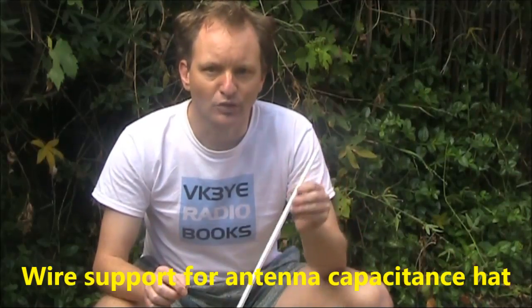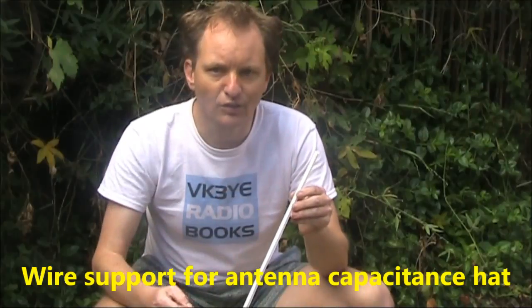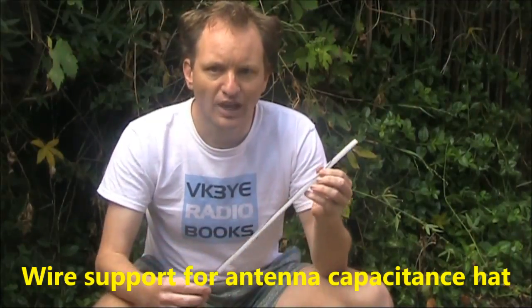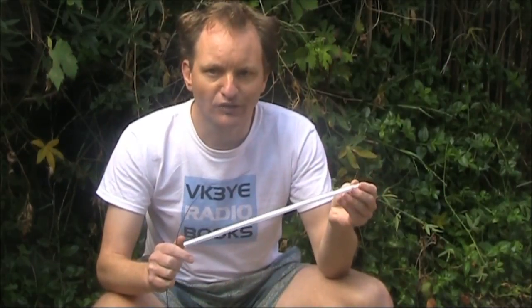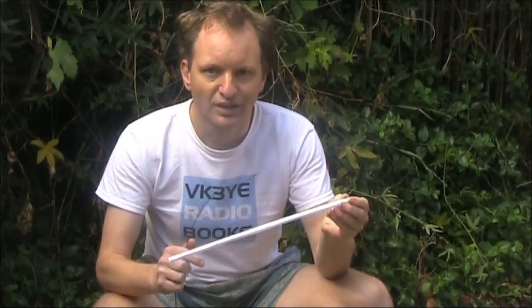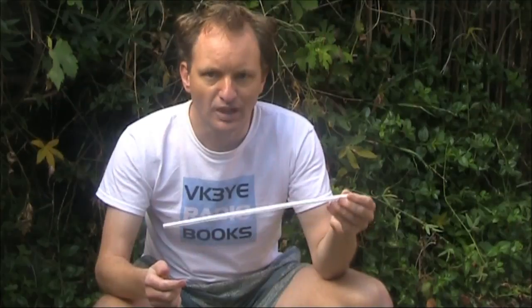Another application for core flute material is to cut it into thin strips. This could be used to support otherwise flexible wire. If you had several of them in a star configuration, that could be set up to provide a capacitance hat. A capacitance hat is useful on lower HF and medium frequency antennas, and allows short verticals to perform very well. The lightness of the thin wire and the core flute material could be a good combination if you're building a portable antenna that has to be dismantled and set up.